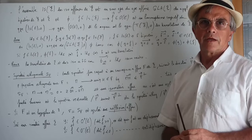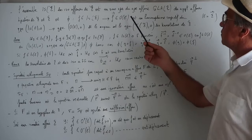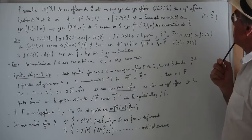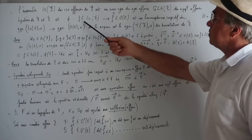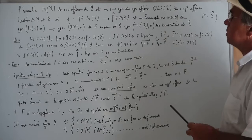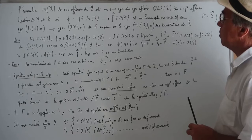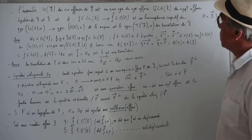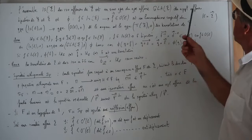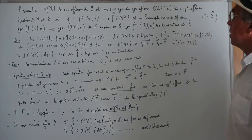L'ensemble Is(E) des isométries affines de E est un sous-groupe du groupe affine GL_A(E), le groupe des applications affines bijectives de E vers E. L'application Φ qui à F appartenant à Is(E) associe sa partie linéaire est un homomorphisme surjectif du groupe Is(E) vers le groupe O(E) des isométries vectorielles de E, dont le noyau est le groupe T(E) des translations de E.